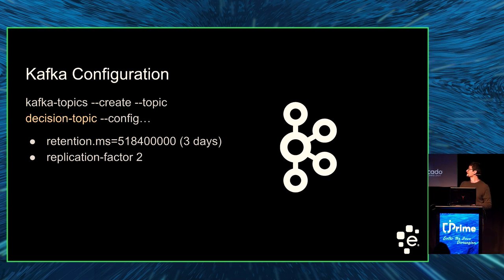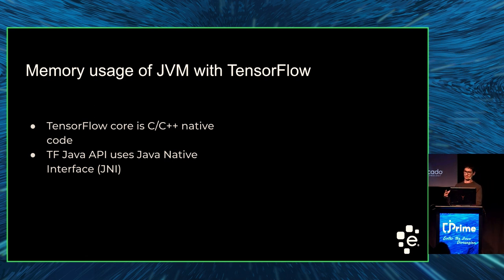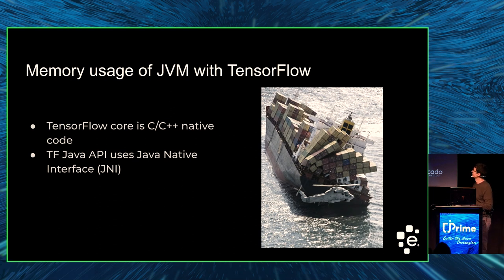Another thing we learned the hard way was memory configuration. When you run TensorFlow, especially with the CPU part, it stores your ML model — when loaded — outside the JVM in native memory. So if you limit your Docker container memory, for instance when running in Kubernetes, you have to give it enough space for both the JVM and the TensorFlow native part where the ML model is loaded. If you don't do that, your Docker container will get killed.